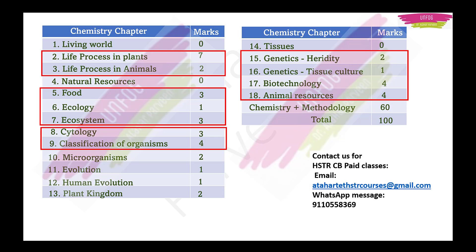Finally, go for Microorganisms, Evolution, Human Evolution, and Plant Kingdom — this group of chapters can get you 6 marks if you prepare well. The remaining three chapters — Living World, Natural Resources, and Tissues — are very general. You have been reading topics from these chapters since school days, so you don't need to worry much. If you have time after preparing all other chapters, go through these at the end.